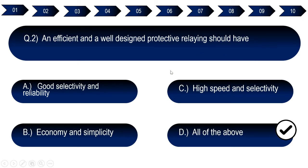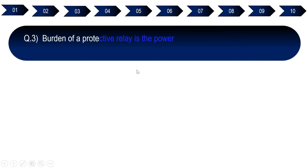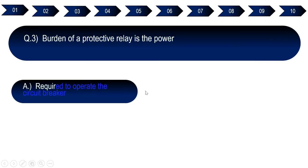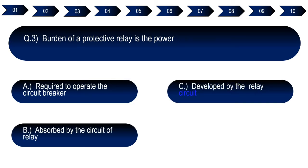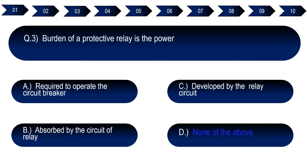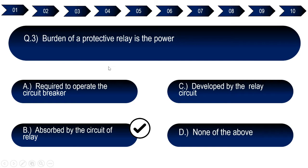Question number three: Burden of a protective relay is the power. Option A: required to operate the circuit breakers. Option B: absorbed by the circuit of relay. Option C: developed by the relay circuit. Option D: none of the above. The right answer for question number three is option B — absorbed by the circuit of relay.